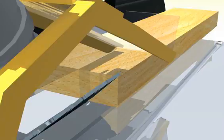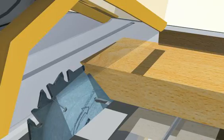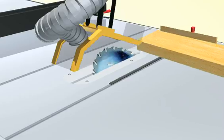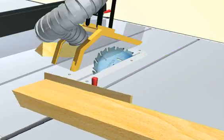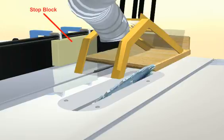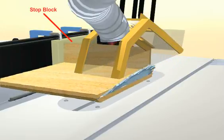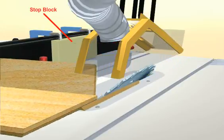Bevels can be cut with the grain or cross-grain. A miter gauge or cross-cut sled is recommended for cross-grain cutting. Here, a stop block is being used to chamfer a panel equally on all four edges.